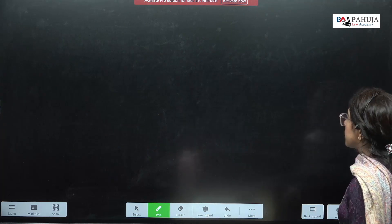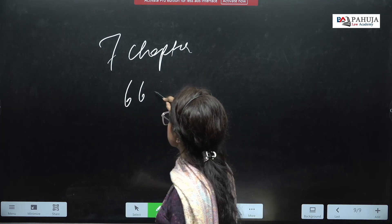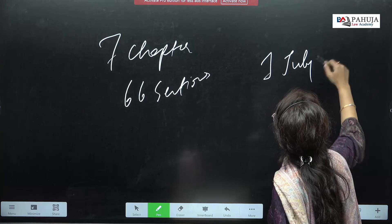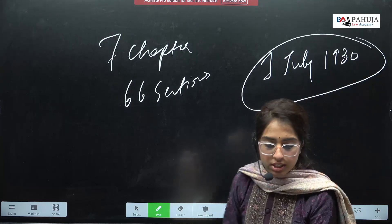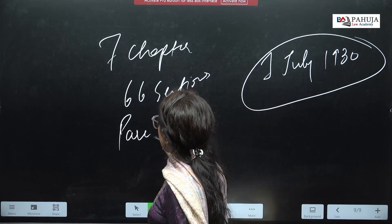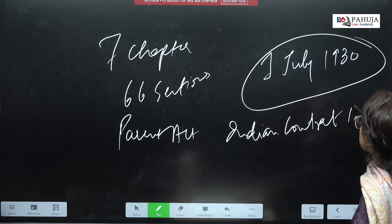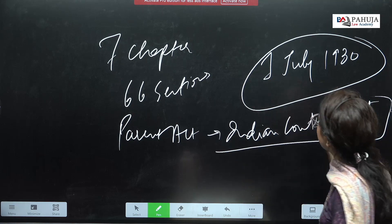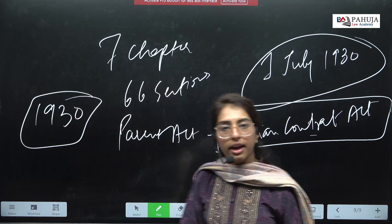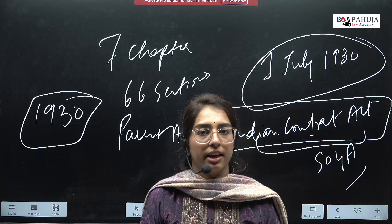One more basic thing: how many chapters and sections does SOGA have? SOGA has 7 chapters and 66 sections. What is the enforcement date of SOGA? The enforcement date is 1st July 1930. SOGA was enforced on 1st July 1930 and its Parent Act is the Indian Contract Act. Before 1930, all SOGA provisions were given in the Indian Contract Act.